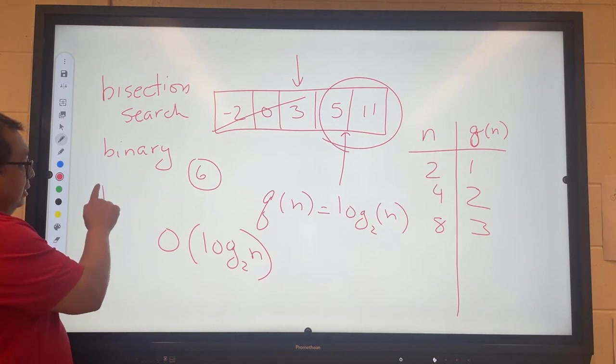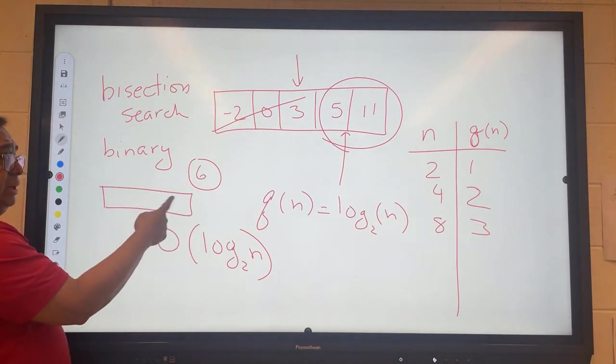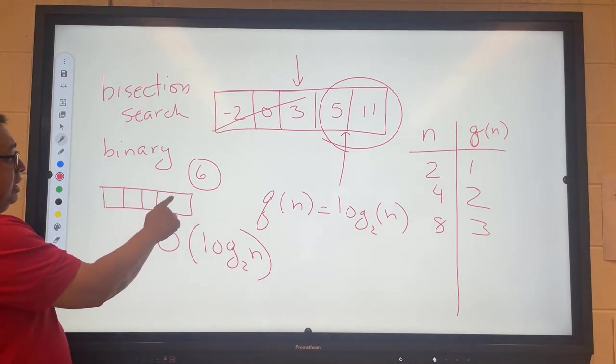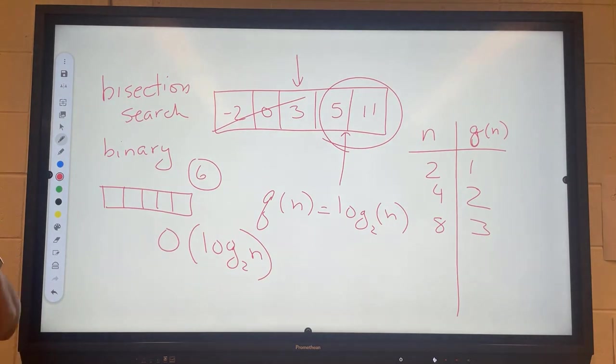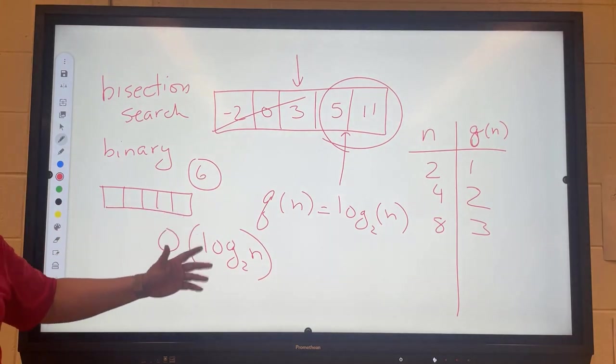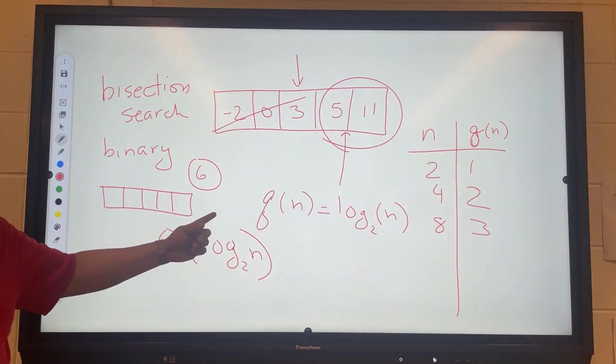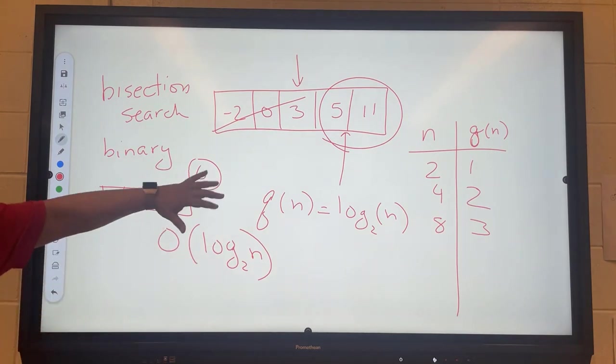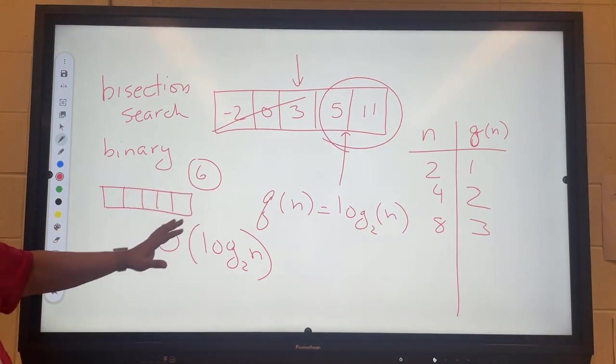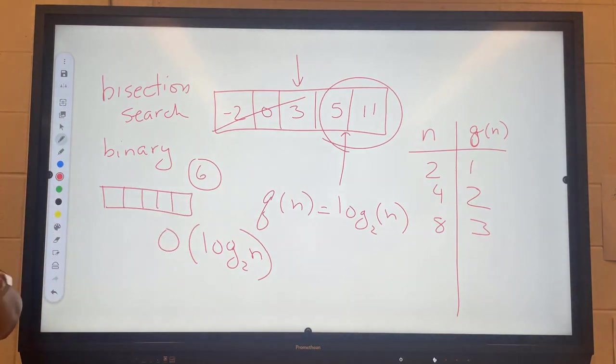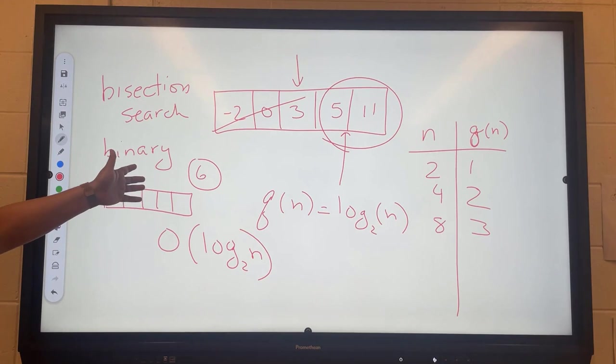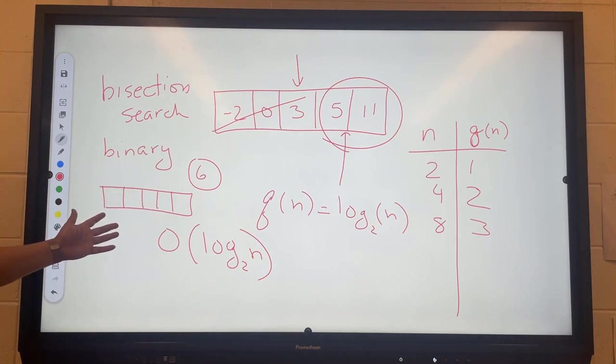Let's say I have an unsorted array. It's pretty large and completely unsorted. If I'm looking for a number, should I do a linear search or should I sort the array first and then do a bisection search? What are the advantages and disadvantages of each approach? We just said that the bisection search is a lot faster. Does that mean I should just sort the array first and use the bisection method?